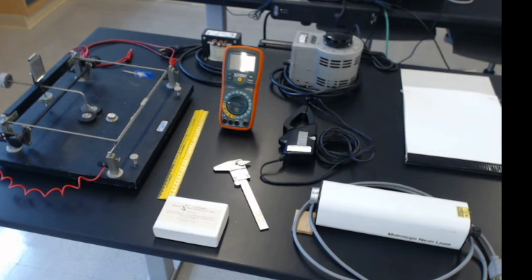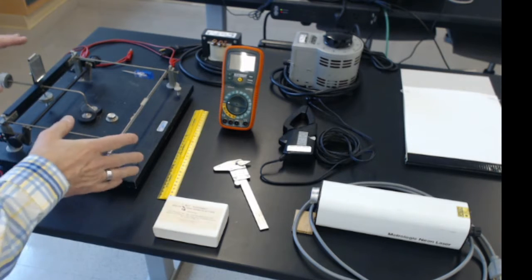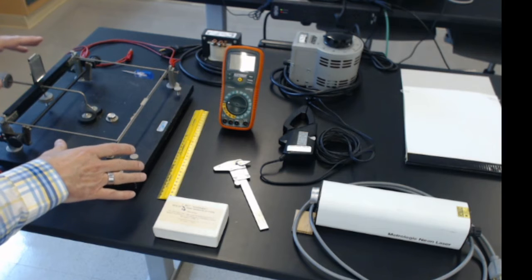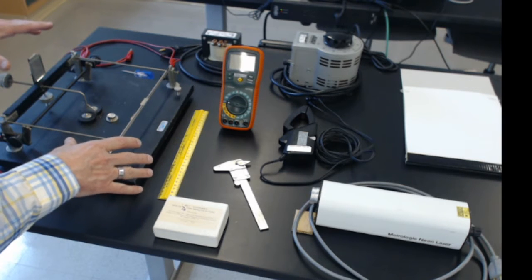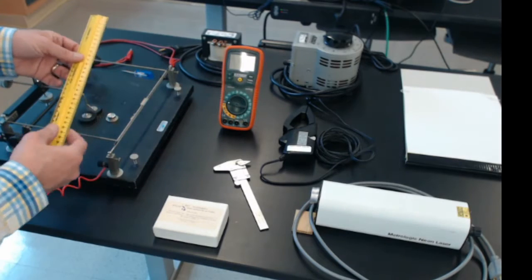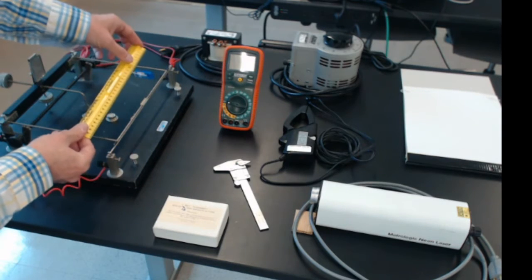Okay, here's the equipment that we're going to use for this experiment. First of all, this is the current balance board, and I'll go into a little bit more detail about how it's hooked up. We've got a ruler so that we can measure the length of the wires where they're in parallel.